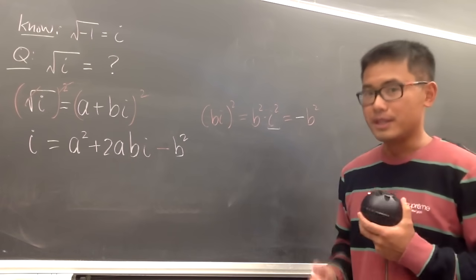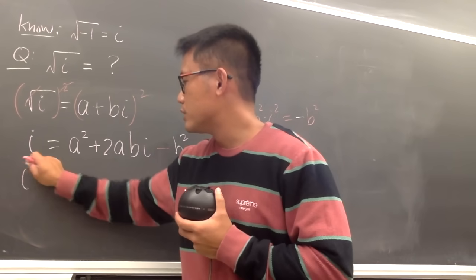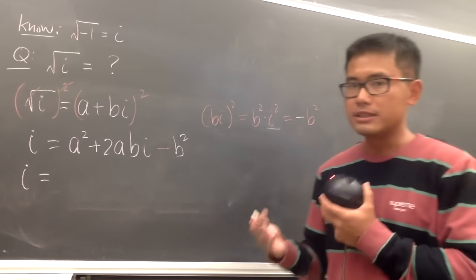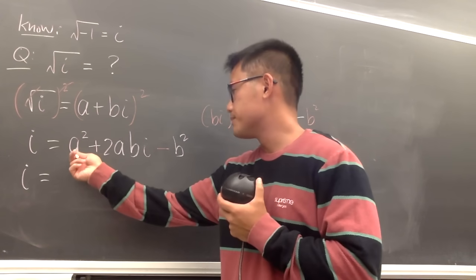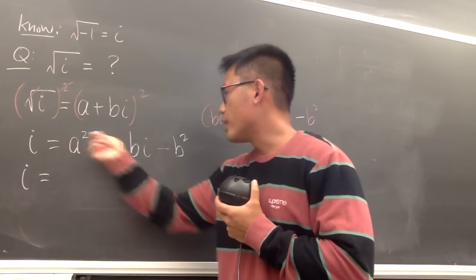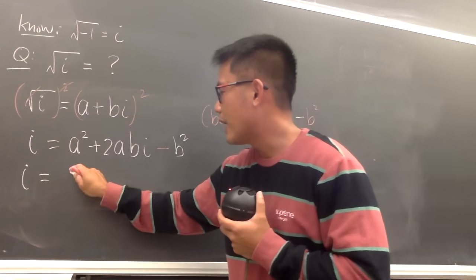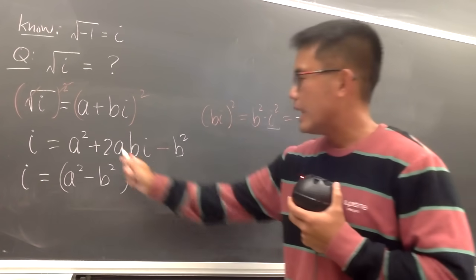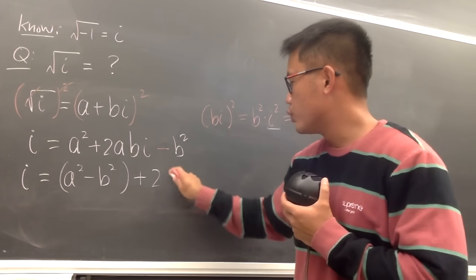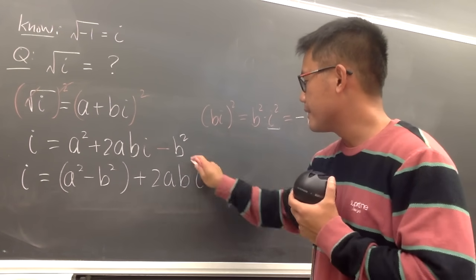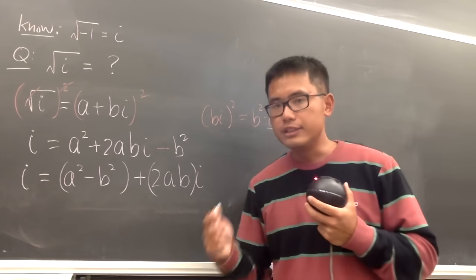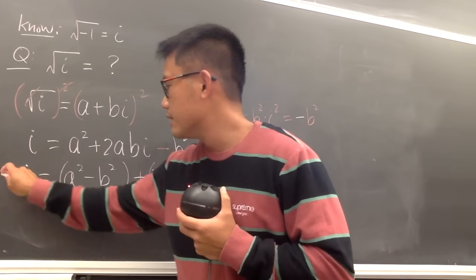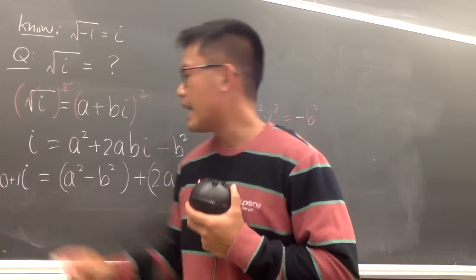Now let's clean things up. On the left-hand side we still have i. On the right-hand side, let's group the real parts first: a² minus b². Then we add the imaginary part: plus 2abi. The left side can be written as 0 plus 1i.